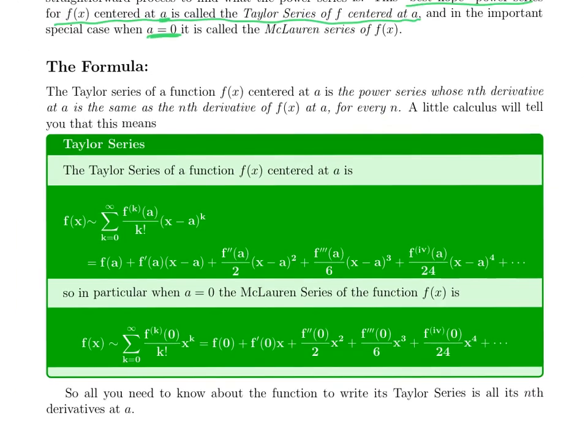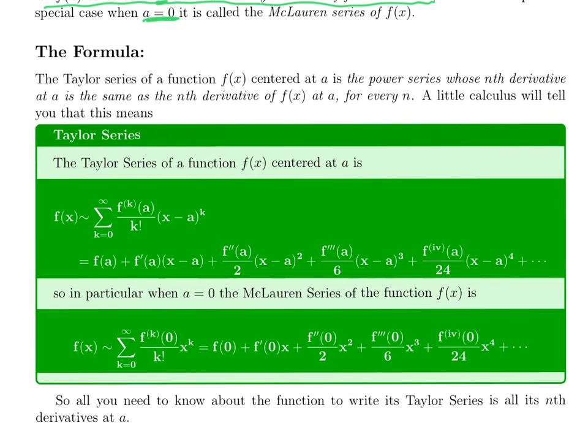The Taylor series of a function f centered at a is the power series whose nth derivative at a, you take the nth derivative and then you plug in x equals a, is the same as the nth derivative of the function at a for every n. So all its derivatives at that one point agree with the function. If you do a little calculus, you will see that that gives you this formula, which is that we have the sum of x minus a to the k, so it's a power series centered at a, and the coefficient of each x minus a to the k is the kth derivative of f evaluated at the number a, so that's a number, divided by k factorial.